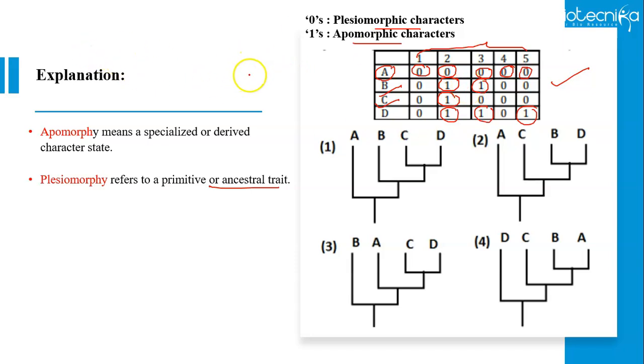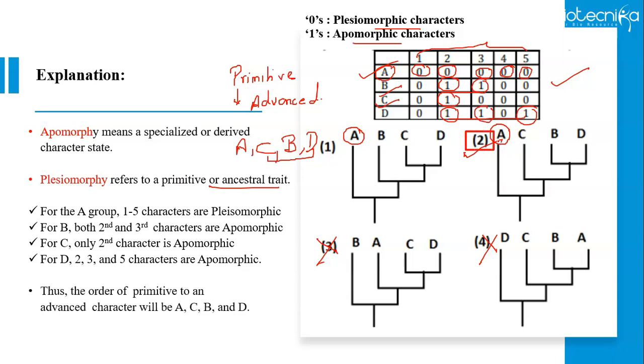If we write down the order of primitive to advance, this is what is asked in the question primitive to advance character. If we order them, then the order will be A, because it includes the plesiomorphic characters. Then, it will be C, because it has only one apomorphic character, derived character. Then, it will be B, because it has two apomorphic characters. And finally, D, which has three apomorphic characters. If we look at the cladograms, A is primitive, which is given in option 1 and 2, that means answer is between option 1 and 2, 3 and 4 cannot be the answer. And if we look at C, B and D, like this is our sequence from primitive to advance, then accordingly, according to the sequence, the most appropriate cladogram is second one. Answer here is option 2.